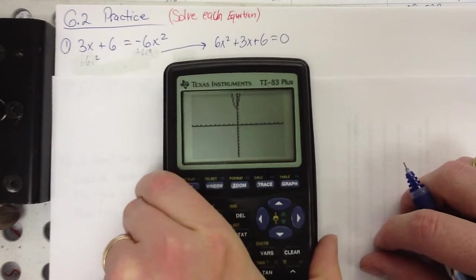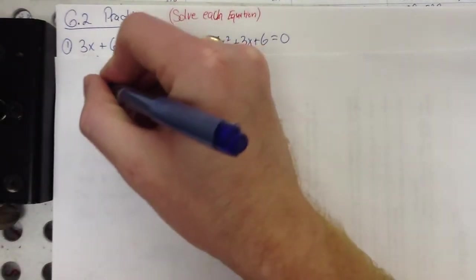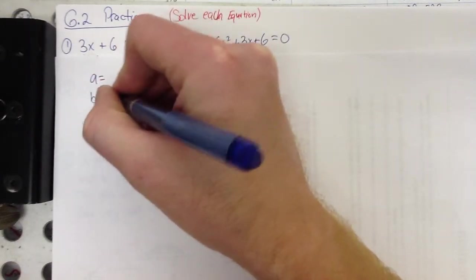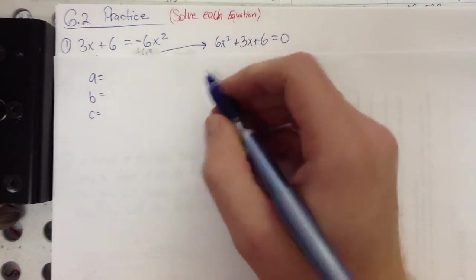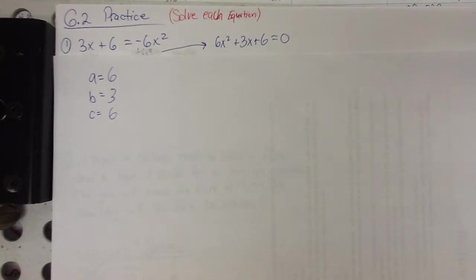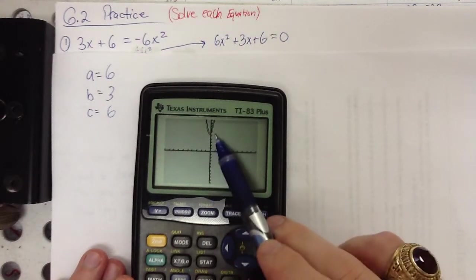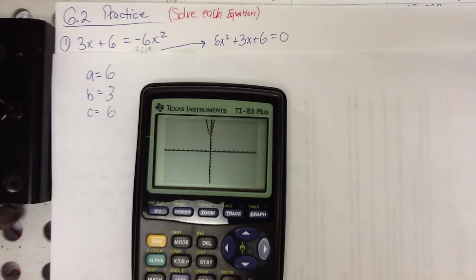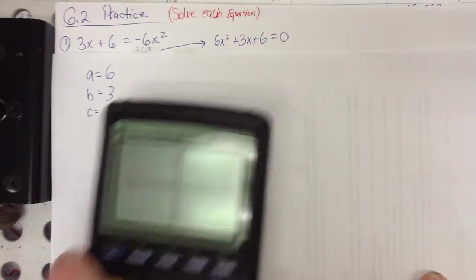And your fallback is the quadratic formula. So, we've got to find a, b, and c, not a squared. A is 6, b is 3, and c is 6. And this is what's going to happen on your homework. If you get into a problem that you can't solve because it doesn't cross the x-axis, you're going to have to go back and do quadratic formula. These are nice if they cross the x-axis, but it doesn't always happen.